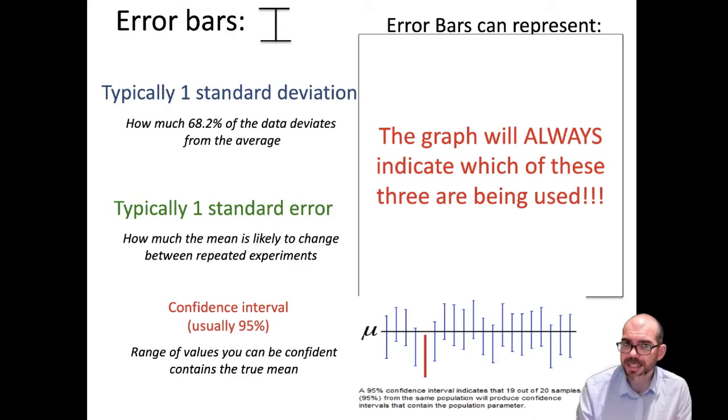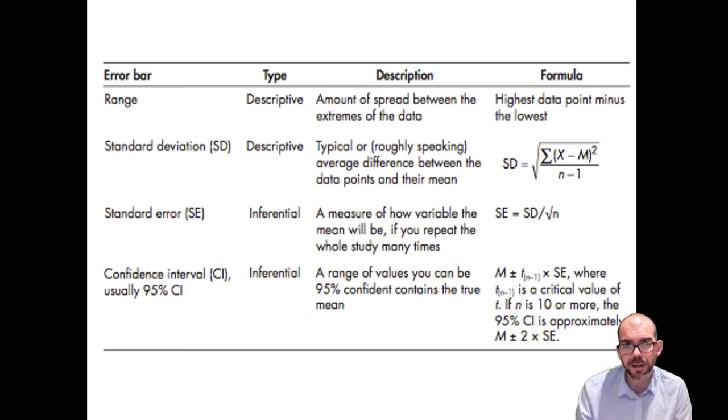The graph always has to tell you which of these three the error bars represent. So that's why I strongly encourage you when encountering a graph, particularly on FRQs, to read the caption under the graph. If there are error bars, that caption will tell you what they mean. And for all of these standard deviation, sample error, and confidence interval, you can find formulas if you need to be able to calculate them on the exam on your equation sheet.